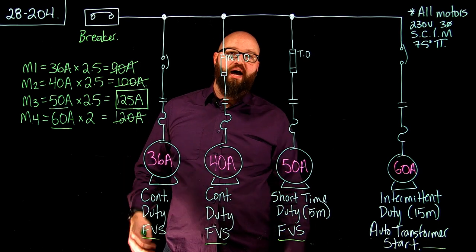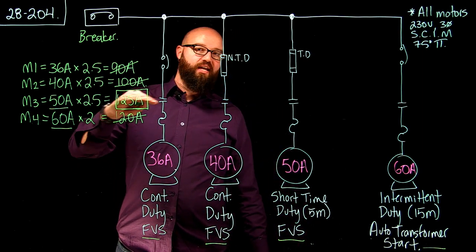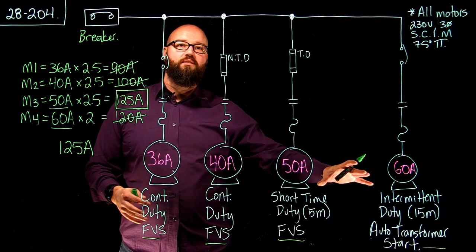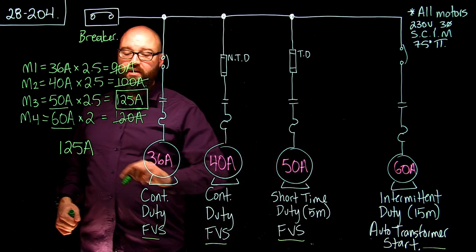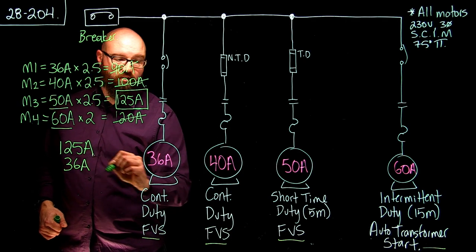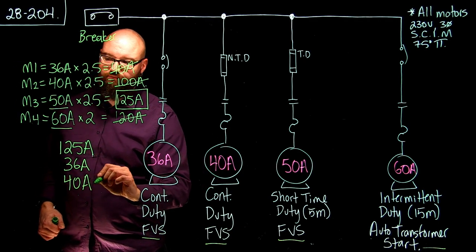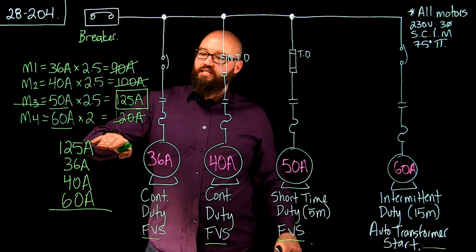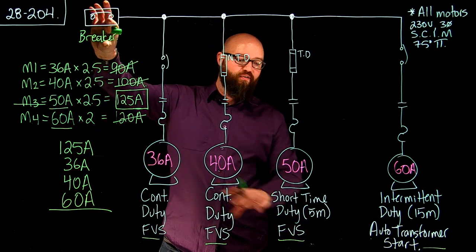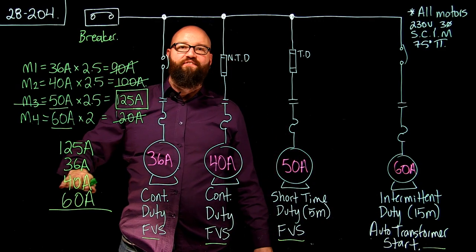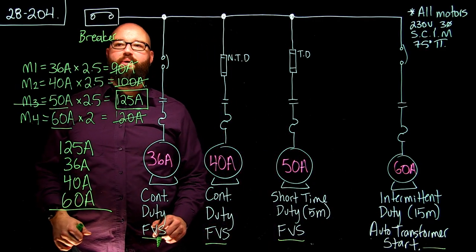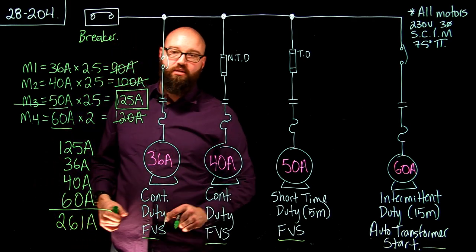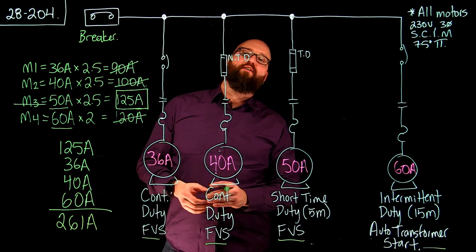Once we know which motor has the highest calculated value, we take that calculated value — in this case, 125 amps — and we add the rest of our FLAs (not the calculated values, just the FLAs). So we go: 125 plus 36 amps, plus 40 amps, plus 60 amps. That is the highest calculated value with the breaker in mind, plus the FLA of all the remaining motors. We end up at a maximum calculated setting value of 261 amps.